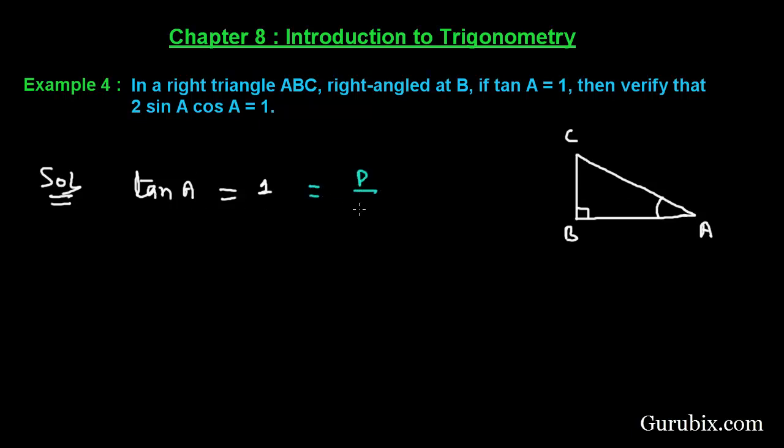The side opposite to given angle is perpendicular, this is base and this is hypotenuse. So from here we can say that tan A is equal to BC over AB.